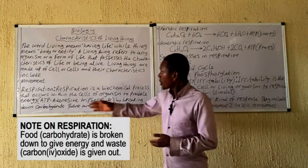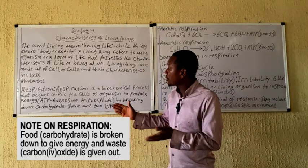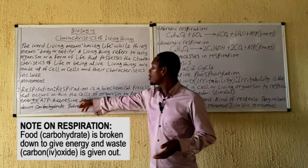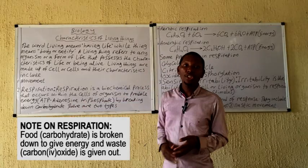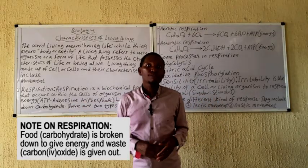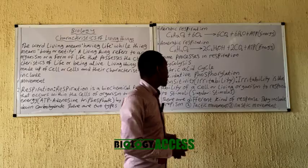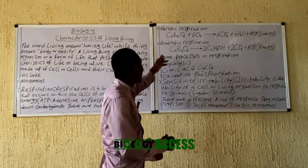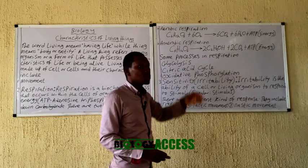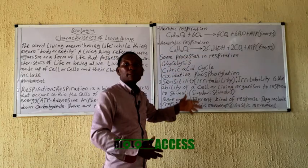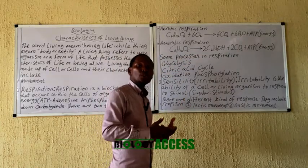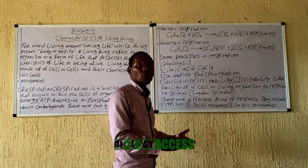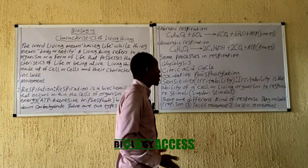The energy produced is usually stored in the body as a chemical called ATP — adenosine tri-phosphate. There are two basic types of respiration: aerobic respiration and anaerobic respiration. In aerobic respiration, the biochemical reaction occurs in the body utilizing oxygen to break down food substances.